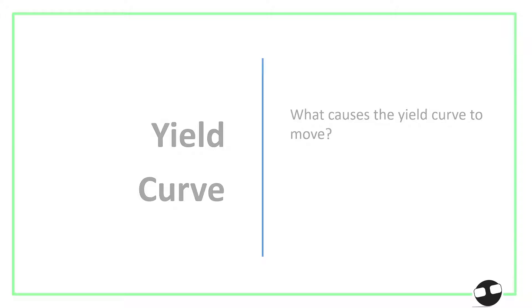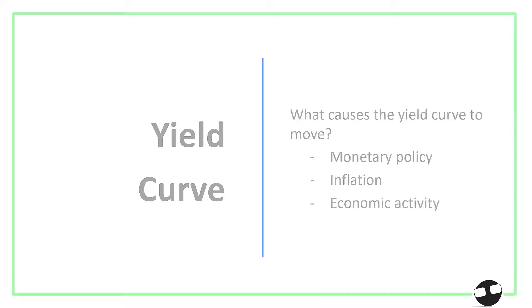Now, what causes the bond yield curve to move? There are so many factors but the common ones — we have monetary policy rates. When the Bangko Sentral ng Pilipinas cuts interest rates, we can see some movements on the short end of the yield curve. For inflation, higher inflation would demand higher interest rates, so there's movement there too. And of course, economic activity — interest rates are actually affected by the demand and supply of credit in the market, so there are movement adjustments in our yield curve.